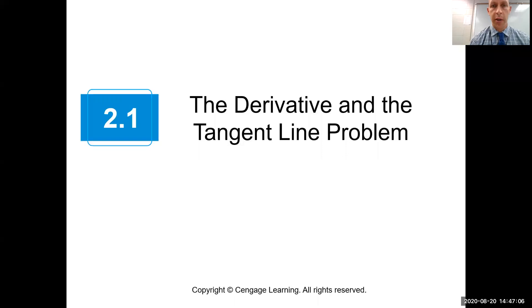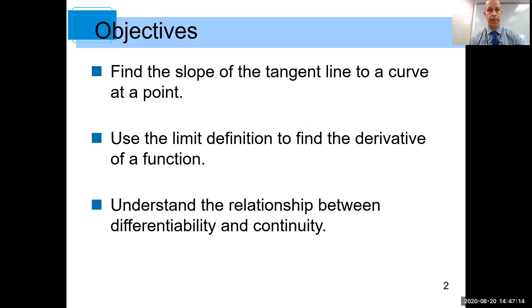Hello students, this is Mr. Allen. Today we are going to move on to a new chapter — Chapter 2, which is on differentiation and something called the derivative. Today's lesson is specifically on section 2.1, which is the derivative and the tangent line problem. Our objectives are to find the slope of a tangent line to a curve, use the limit definition to find the derivative of a function, and understand the relationship between differentiability and continuity.